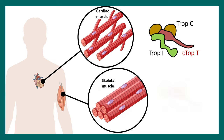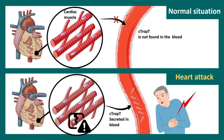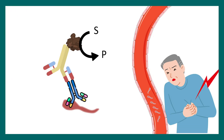Be it skeletal muscle or cardiac muscle, all three troponins are present. However, the troponins found in cardiac muscle are slightly different from the skeletal muscle versions — cardiac Troponin T is distinct. Generally, these troponins are supposed to remain inside the muscle and are never released into the blood. But under circumstances of a heart attack, cardiac Troponin T leaks into the bloodstream, and the TROP-T test detects this cardiac troponin using an antigen-antibody reaction. That is the sole biology behind the TROP-T test.